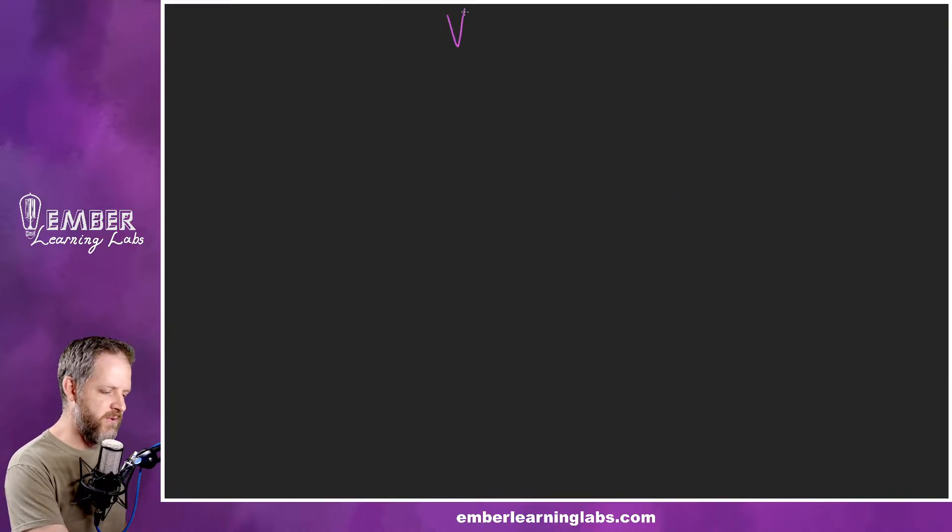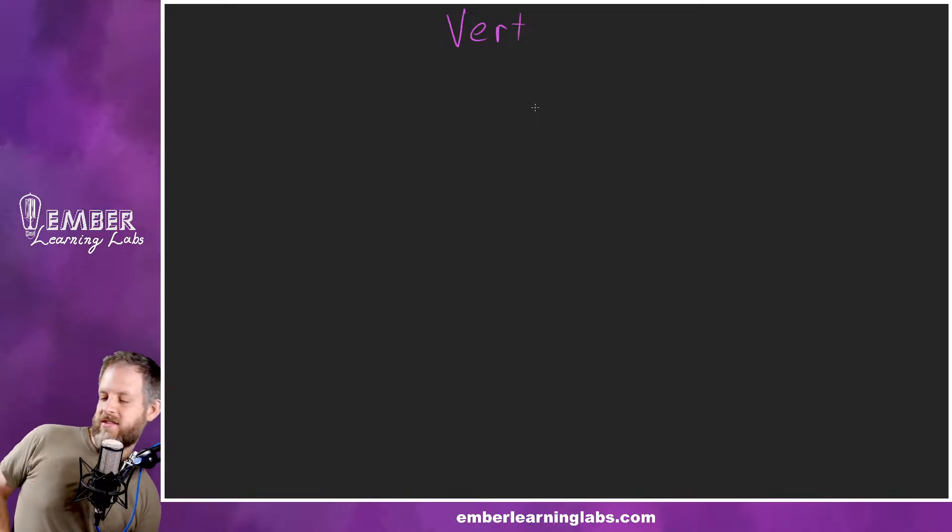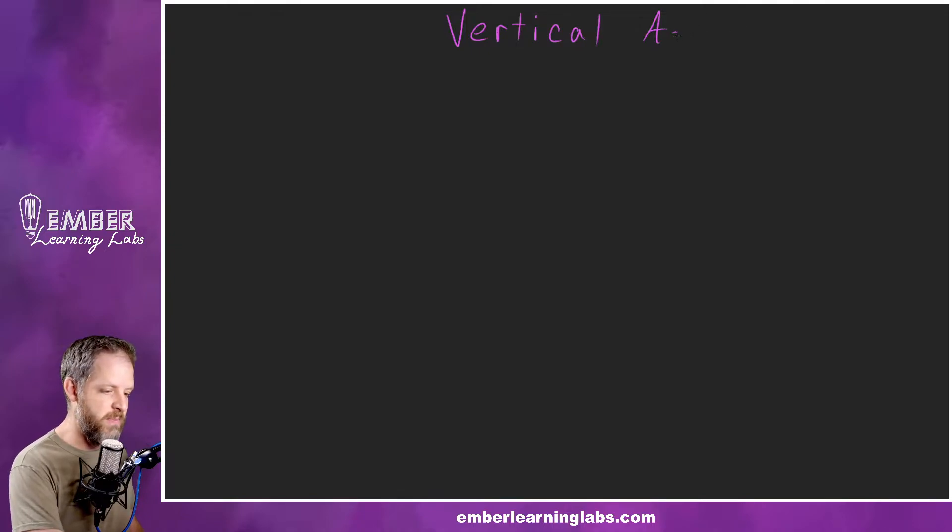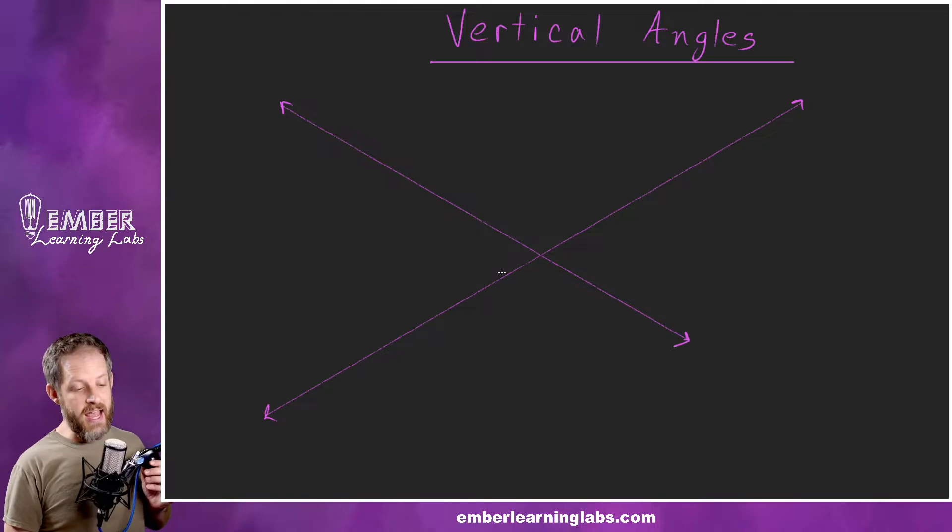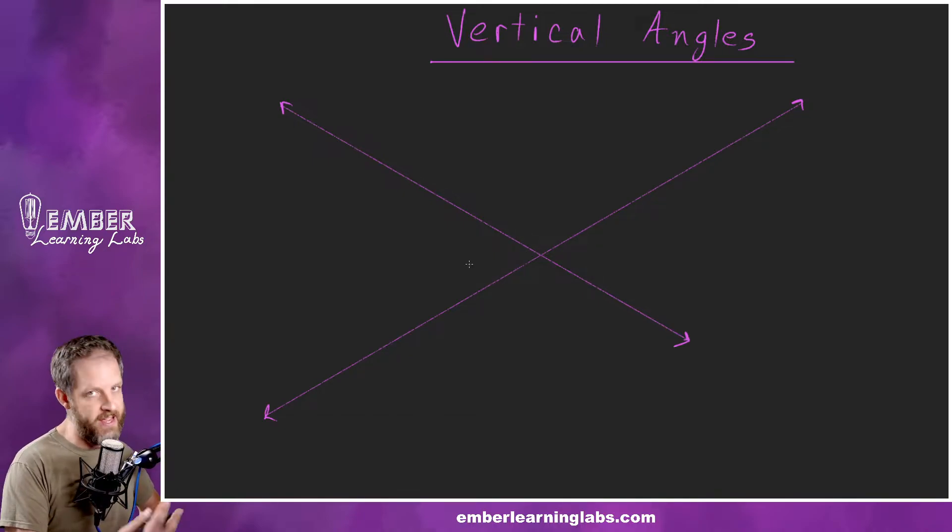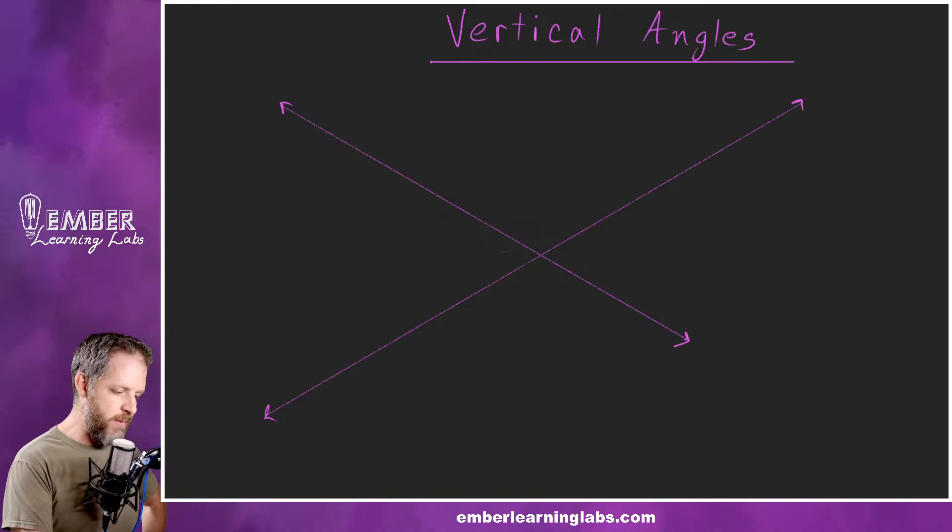The next one we're going to define is vertical angles. If I was to ask you to define a vertical angle, that's harder to do than linear pair. Vertical angles, because they're not always vertical. Vertical means up and down, right? But vertical angles are not always vertical. I'll show you what I mean once I finish writing these two words.